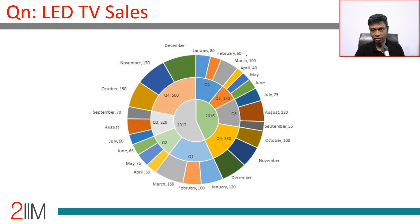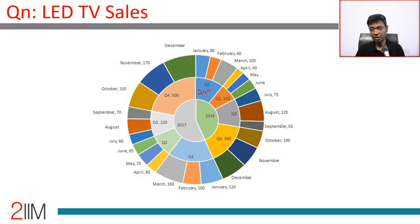For Q1 2016, we have January, February, and March. So we can write this total: 80 plus 60 is 140, plus 100 is 240. For Q2, we know April but not May and June — we'll come back to that. For Q3, we know July, August, September: 75 plus 55 is 130, plus 120 is 250.